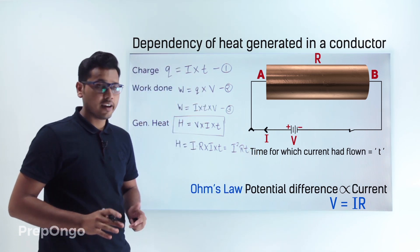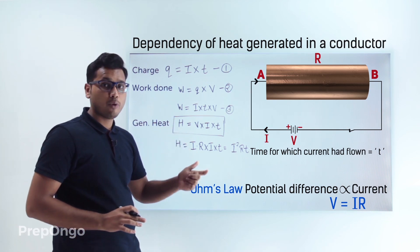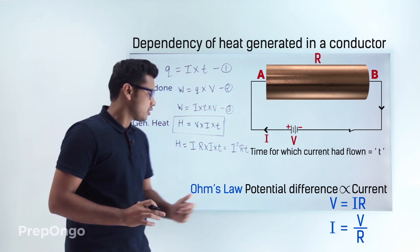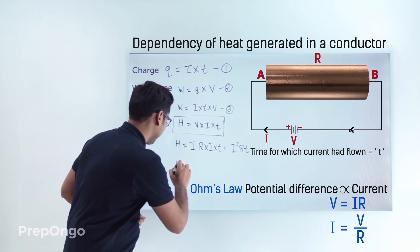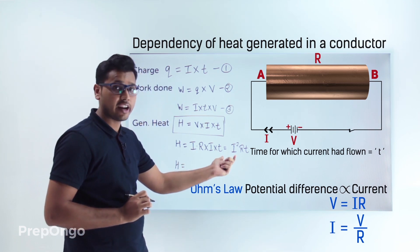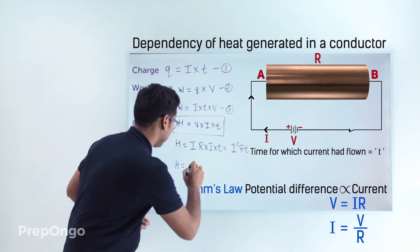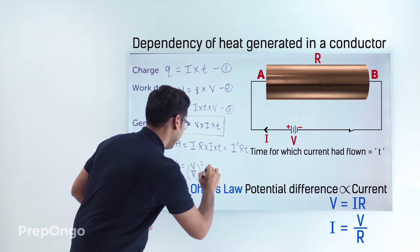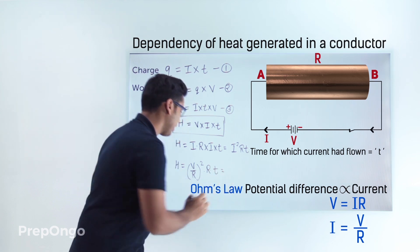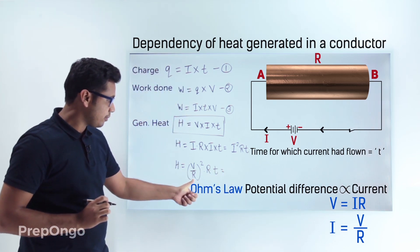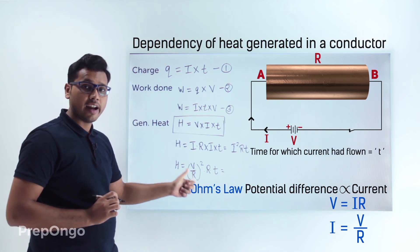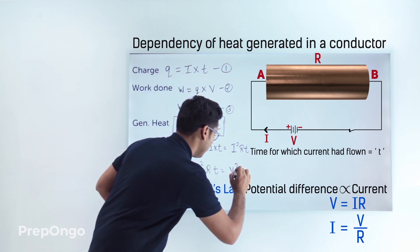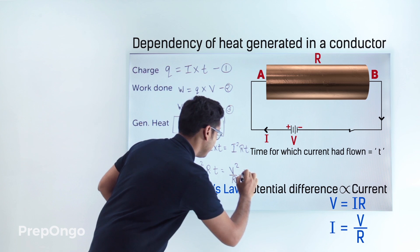We can again apply Ohm's law and substitute I = V/R into the equation. So H = (V/R)² × R × t. Solving this, one R cancels from R² in the numerator and R in the denominator, giving H = V²/R × t.